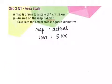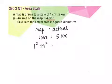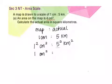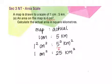What we are going to do now is convert this into the area scale, where 1 cm² is to 5² km². The next line is not to do any calculation yet — we simplify the numbers. So 1 squared is 1 cm², and 5 squared is 5 times 5, which is 25. So we get 25 km². Now the area scale is ready.